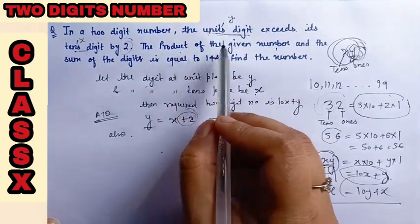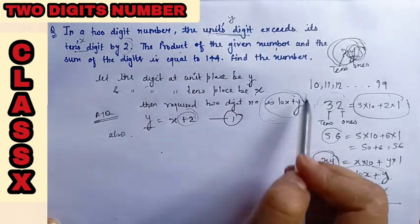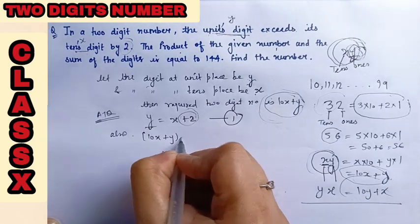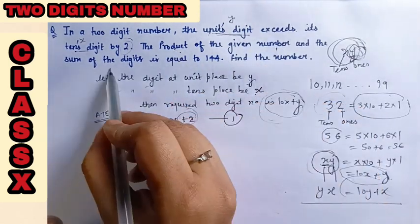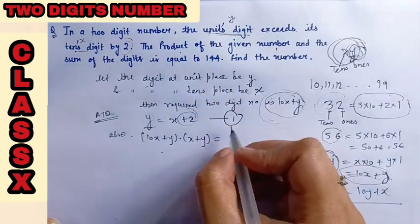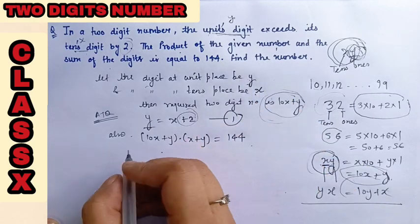Also, the product of the given number, the number's product. Always remember, when number is mentioned, you have to write 10x plus y. So the number, the product of the number and the sum of the digits, product with the sum of the digits, x plus y, and the answer is 144. So we will simplify the equation.